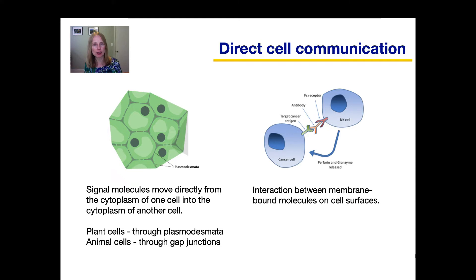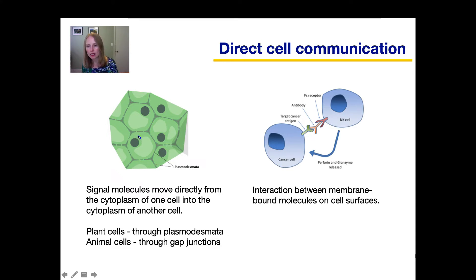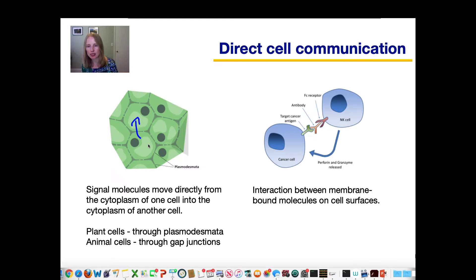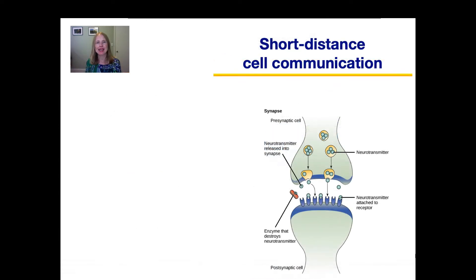If cells are right next to each other, they can do direct cell communication in one of two ways. In one method, a cell sends a molecule directly from its cytoplasm into the cytoplasm of the adjacent cell through junctions — in plant cells these are called plasmodesmata, and in animal cells they're called gap junctions. On the other hand, cells can also communicate using molecules that are sticking out of their plasma membrane, where membrane-bound molecules bind to each other and interact to send a message that way.